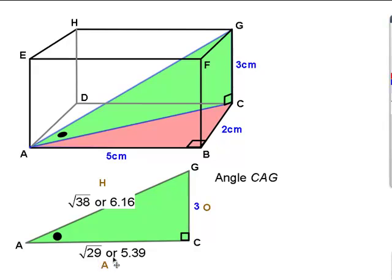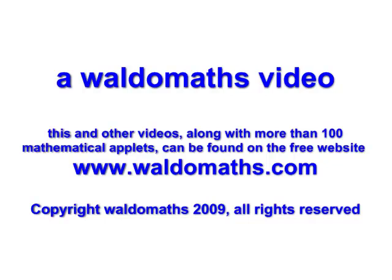Which of those two am I going to use? Well, I'm going to use the more accurate one, or the exact one, which is root 29, and let the calculator take the strain, because the calculator can handle that calculation very well, giving us an answer of 29.1 degrees rounded to three significant figures. Thank you.